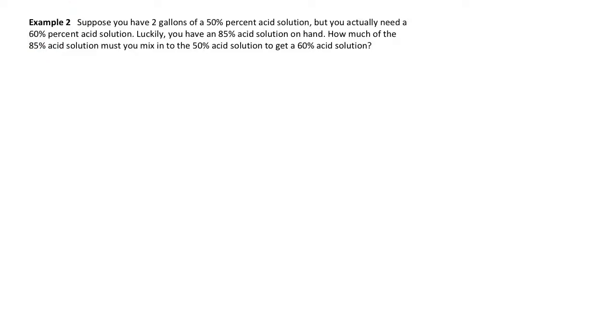For example two, again, another mixture problem, but it's going to be a little bit different in terms of what we solve for. Suppose you have two gallons of a 50 percent acid solution, but you actually need a 60 percent acid solution. Luckily we'll assume that you have this 85 percent acid solution lying around. If you pour 85 percent acid into something that is 50 percent acid, it's going to raise the 50 percent up and you want to choose the right amount so it lands at 60 percent. How much of the 85 do you pour into the 50 to increase the concentration to 60 percent?